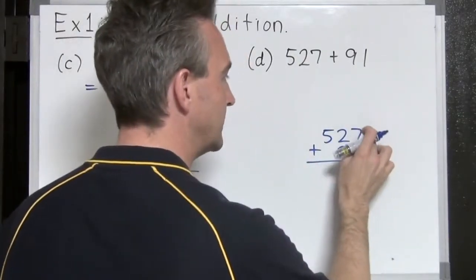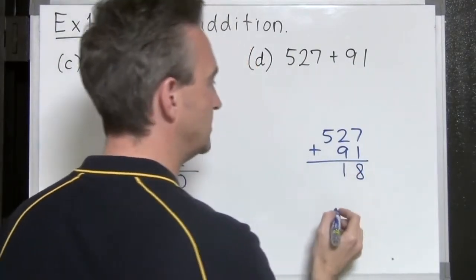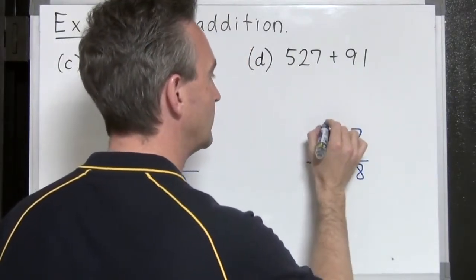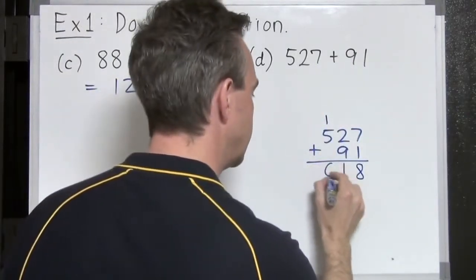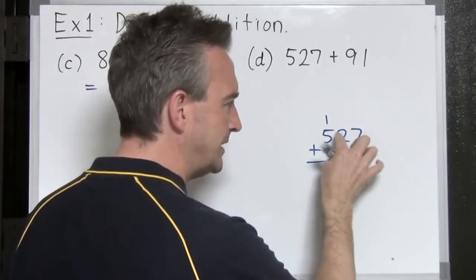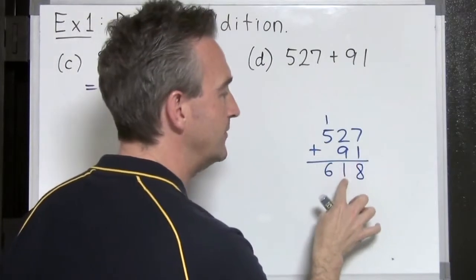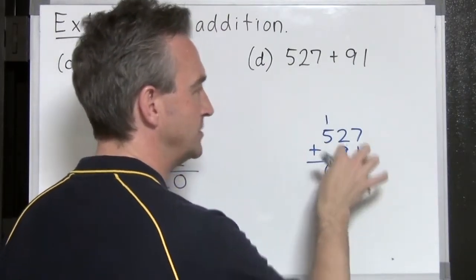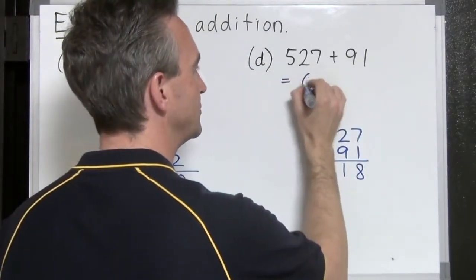Here we go. 7 plus 1 is 8. 2 plus 9 is 11. So the 1 from the 11 goes here. And I carry the other 1 from the 11 up here. 1 plus 5 gives 6. So again, what's happened here is we've had 20 plus 90 giving 110. The 10 from the 110 goes here. The 100 from the 110 gets carried up here into the hundreds column. So we end up with 618.